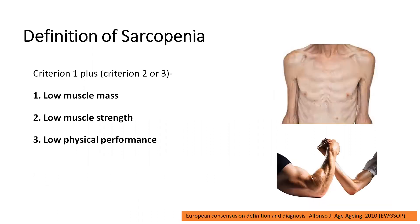Let us now understand the definition of sarcopenia. In common terms, 'sarco' means muscle and 'penia' means loss of muscle, so simply put, loss of muscle mass is sarcopenia. However, the criteria to define sarcopenia require the presence of low muscle mass as well as either low muscle strength or low muscle performance.